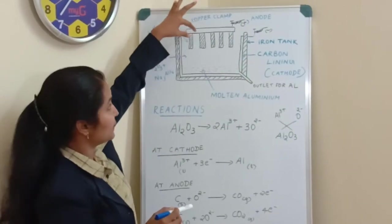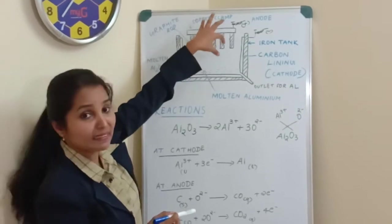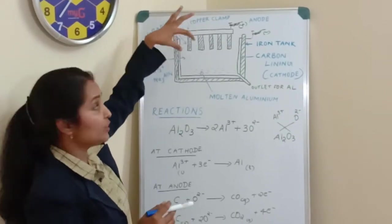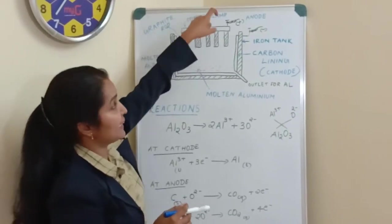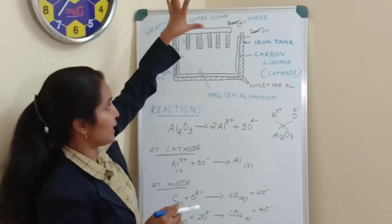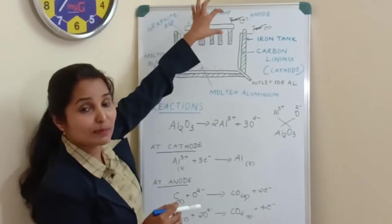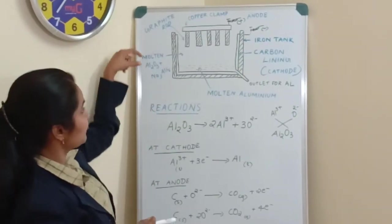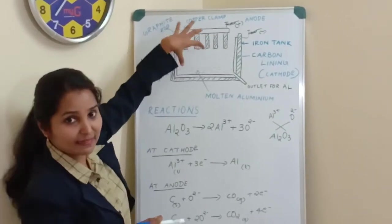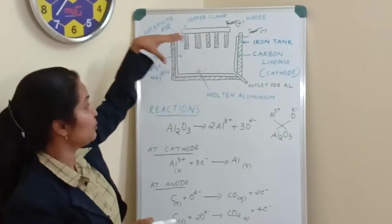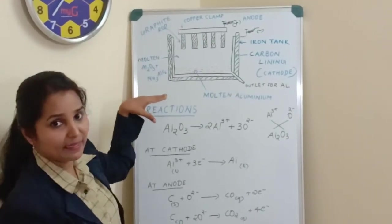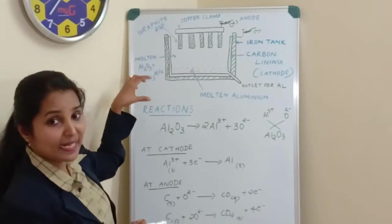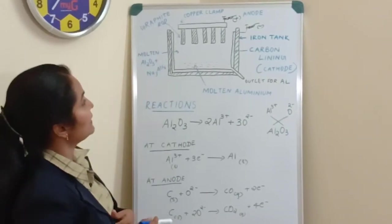And then here you can see, upon a copper clamp, graphite rods are hanging down to the electrolyte. And those graphite rods are connected to the positive terminal of the battery. And so that is the positive electrode, that is anode. And here we have the electrolyte. Electrolyte is made up of molten alumina and cryolite, that is Na3AlF6.